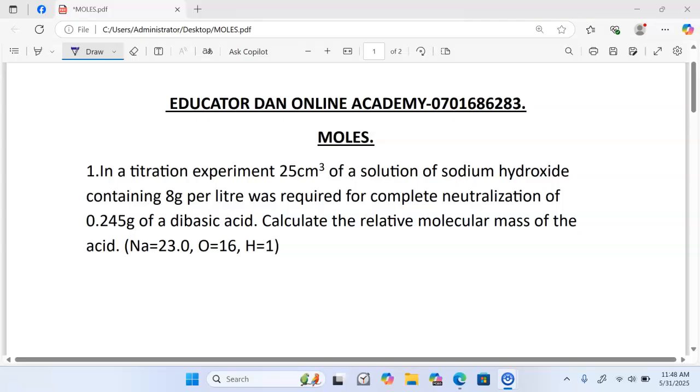In a titration experiment, 25 cm³ of a solution of sodium hydroxide containing 8 grams per liter was required for complete neutralization of 0.245 grams of a dibasic acid. Calculate the relative molecular mass of the acid. Sodium has a relative atomic mass of 23, oxygen 16, and hydrogen 1.